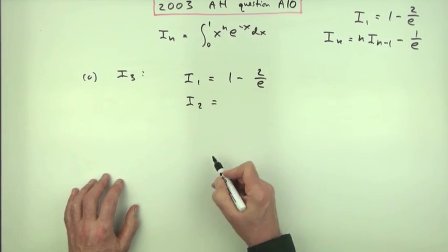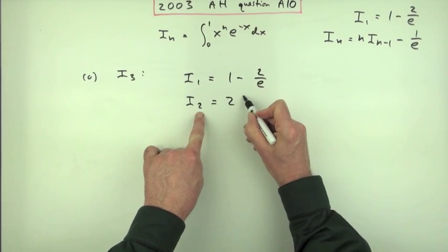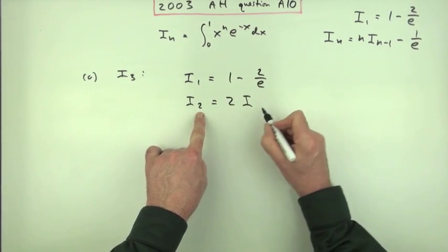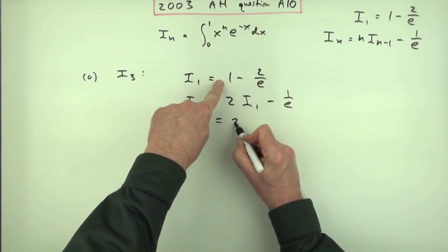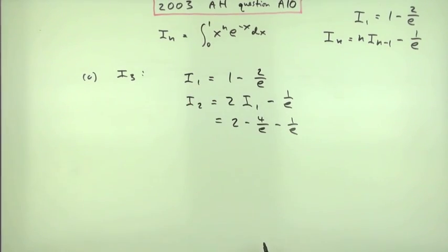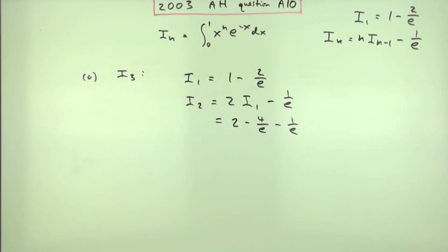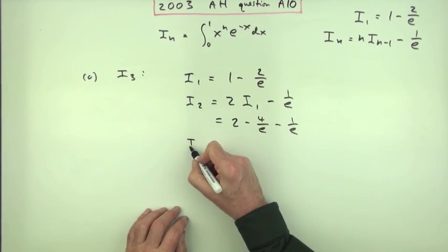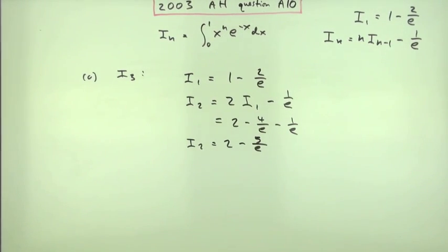Which means i₂ is equal to 2, 2 times i₁ less than it, i₁ minus 1 upon e. So it's 2 times this. So it's 2 minus 4 over e, minus 1 over e. Double that, take away 1 over e. So that means that i₂ is equal to 2 minus, and that will be 5 over e.